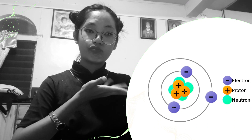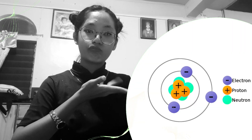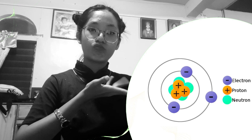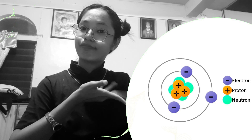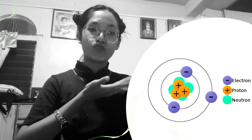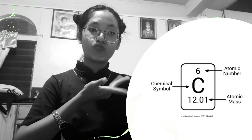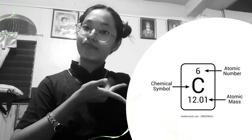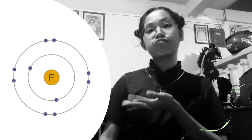Atoms consist of three main subatomic particles: protons, neutrons, and electrons. Protons have a positive charge, neutrons are electrically neutral, and electrons carry a negative charge. Protons and neutrons are located in the nucleus at the center of the atom, while electrons orbit the nucleus in specific energy levels or electron shells. An atom's atomic number represents the number of protons or electrons, while atomic mass represents the sum of protons and neutrons. An ion is an atom or group of atoms with a net positive or negative charge resulting from an unequal number of protons and electrons.